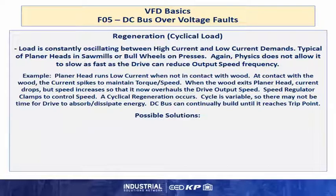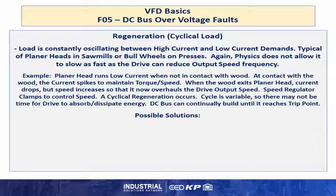Regeneration of cyclical loads: the load is constantly oscillating between high current and low current demands, typical of planter heads and sawmills or bull wheels on presses. Physics does not allow it to slow as fast as the drive can reduce output speed frequency. For example, a planter head runs low current when not in contact with wood. At contact with wood, the current spikes to maintain torque speed. When the wood exits the planter head, current drops but speed increases so that it now overhauls the drive output speed. The speed regulator clamps to control the drive output speed and motor so a cyclical regeneration occurs. The cycle is variable so there may not be time for the drive to absorb or dissipate the energy. The DC bus can continually build until it reaches the trip point.